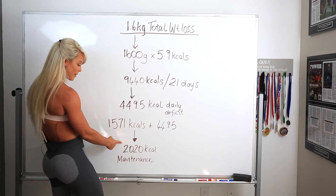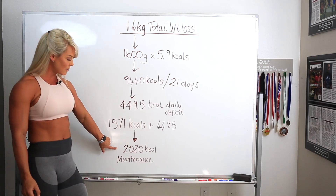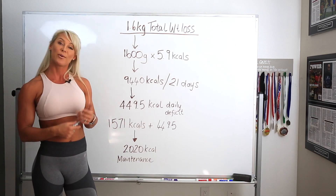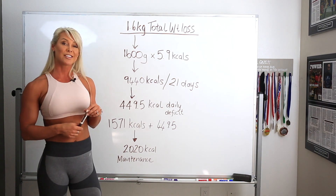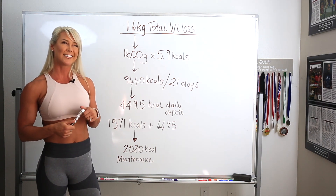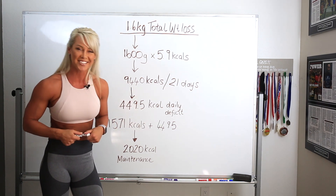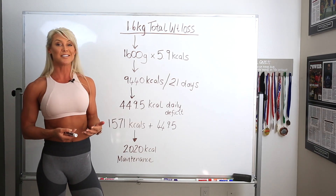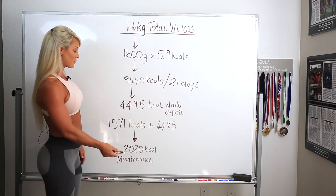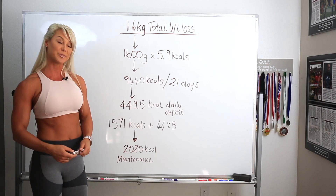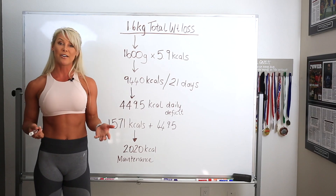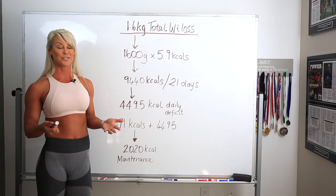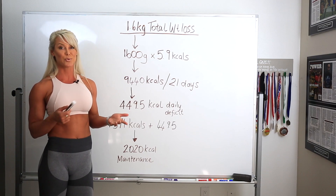This is where we arrive at my maintenance calories for the week. So this week I'm going to be following 2,020 calories. I'm going to be keeping my protein at around 155 grams per day, my carbohydrates at right around 200 grams, and my daily fat intake at 67 grams — which brings me to around 2,020 to 2,023 calories. That's how I've worked out my maintenance calories, and hopefully you can apply this to your own diet if you're trying to determine your maintenance between diet breaks.